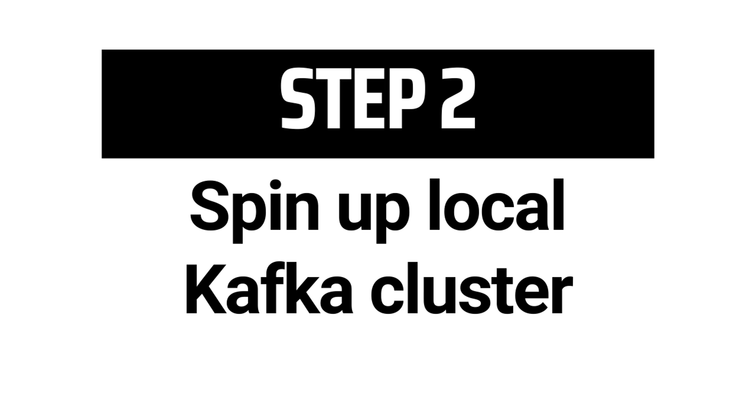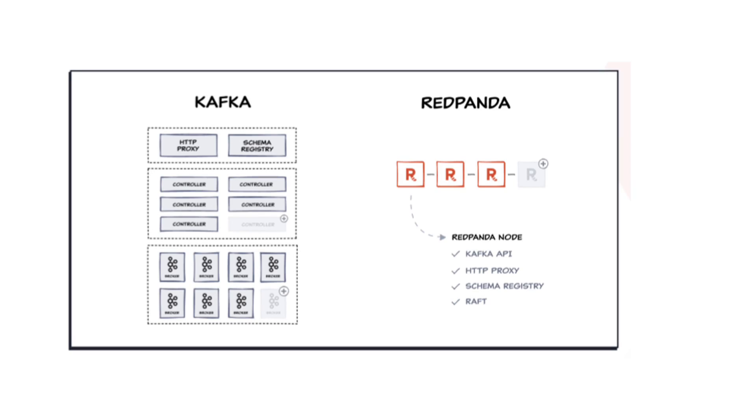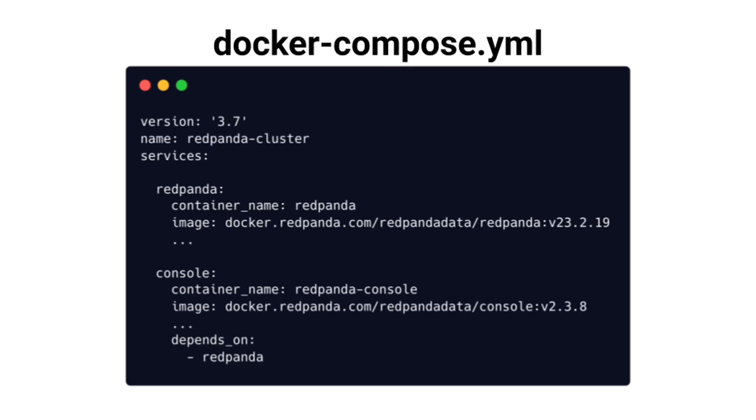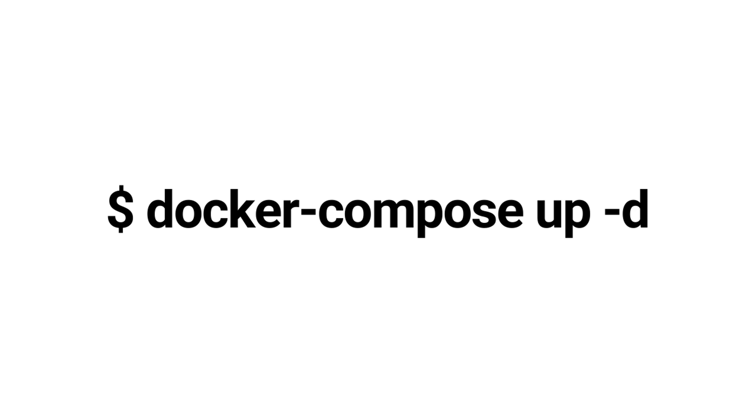Step two: start a local Kafka cluster using Docker Compose. To develop and run our feature engineering service locally, we first need to spin up a Kafka cluster. The easiest way is by using RedPanda and Docker Compose. RedPanda is a Kafka API-compatible streaming data platform written in C++ that eliminates most of the complexities of Apache Kafka while improving performance. You define two services — one RedPanda broker and the RedPanda console — then run 'docker compose up' and the infrastructure is up and running.